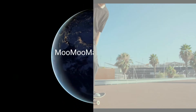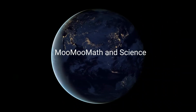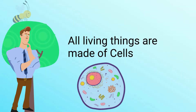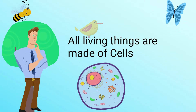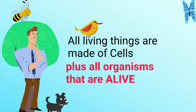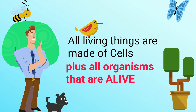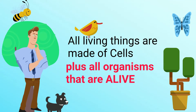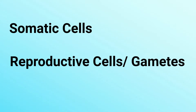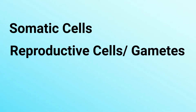Welcome to MooMoo Math and Science and Somatic Cells. All living creatures are made of cells. In plants and animals, there are two major categories of cells: somatic cells and reproductive cells known as gametes.